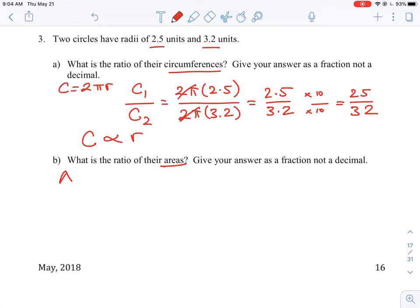So for the areas, again, if we didn't know how to approach this, let's just start by looking at what is the area of a circle. The area of a circle is simply pi r squared. So we could do the same thing that we did in the previous question. We can have area 1 over area 2.